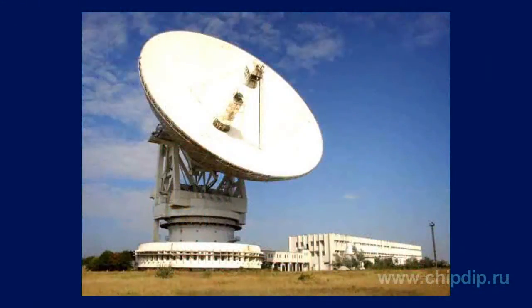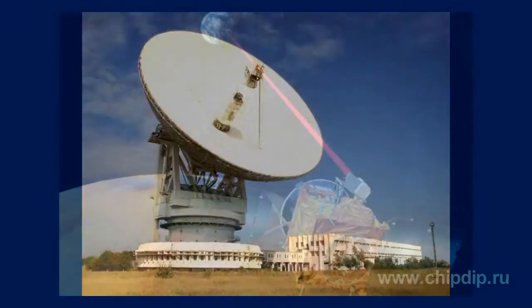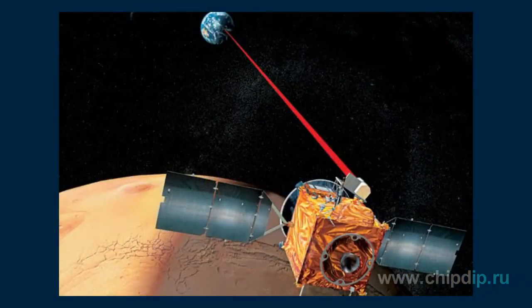A parametric amplifier is most widely used in radio astronomy, deep space and satellite communications, and radio location as a low-noise weak signal amplifier in the UHF range.